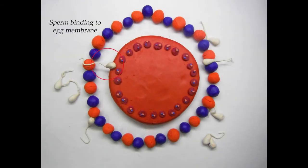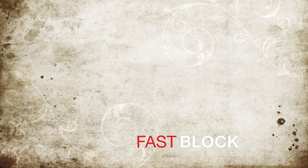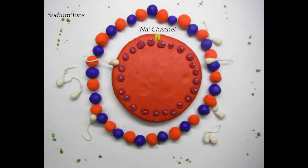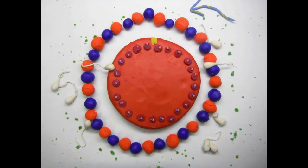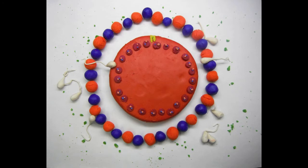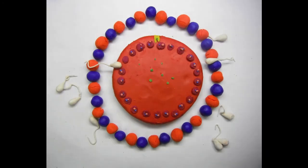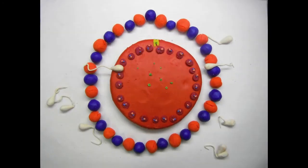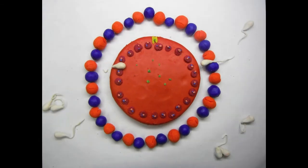Binding of sperm to the egg membrane will initiate the fast block, which is caused by a massive influx of extracellular sodium into the cytoplasm via sodium channels on the egg membrane. This process depolarizes the egg and repels sperm that have not bound the zona pellucida via electrical current.